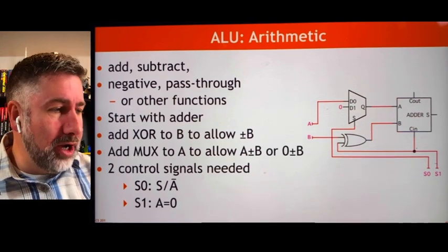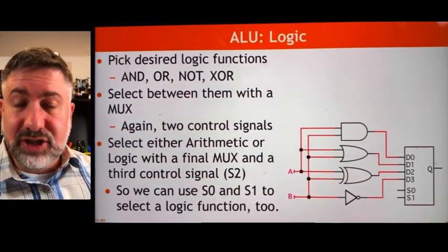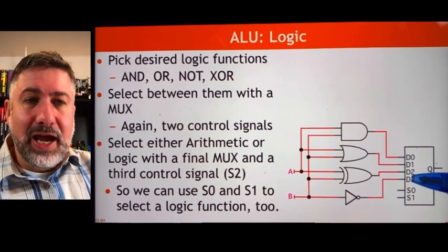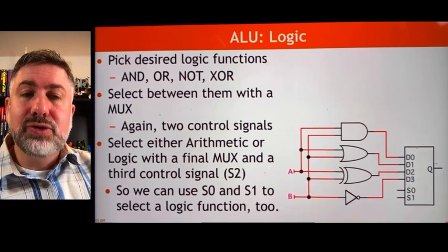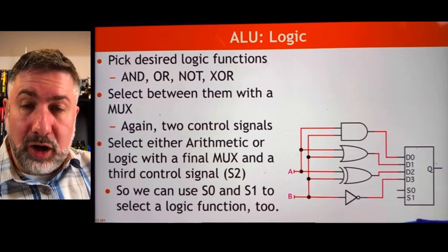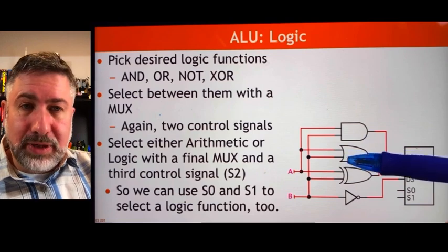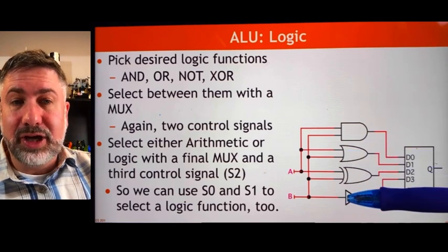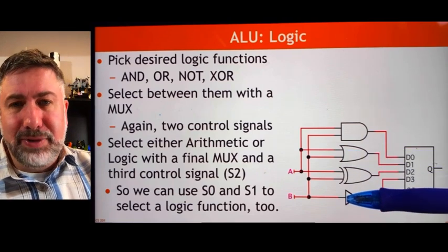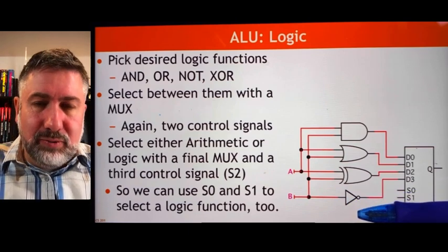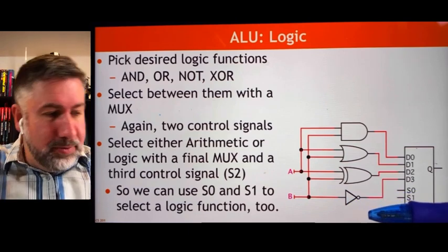So we also want to have some logic functionality. Now, this is very straightforward because all we have to do is put a bunch of logic functionality down and then use a big multiplexer to select which of the logic functions we want for each bit. So we're going to have A and B. We're going to have A or B. We're going to have A exclusive or B. And we're going to have not B. Not B equivalent to and similar to negative B, which we were going to build from the arithmetic side.